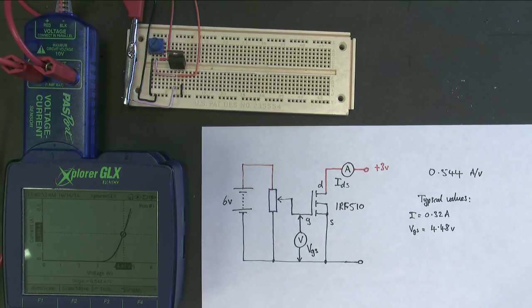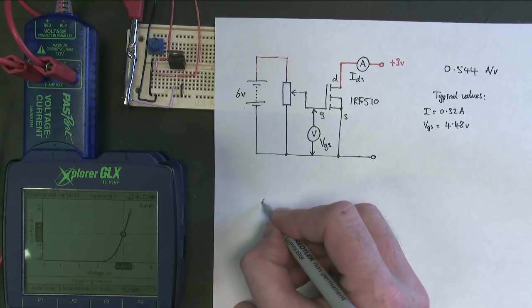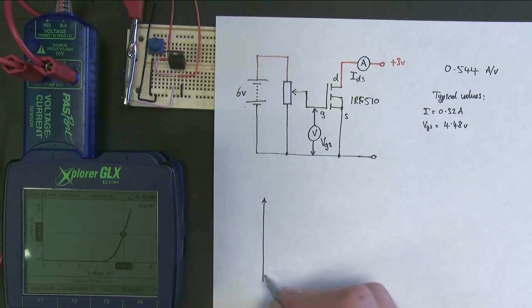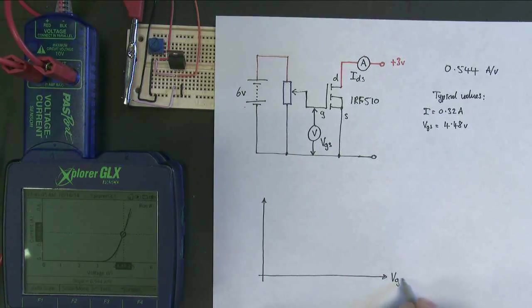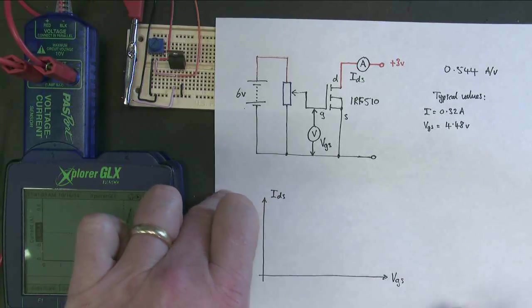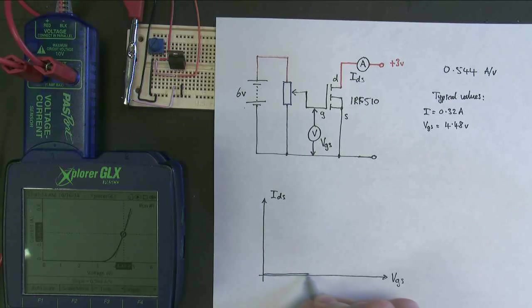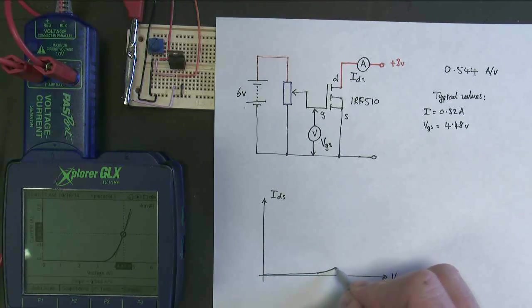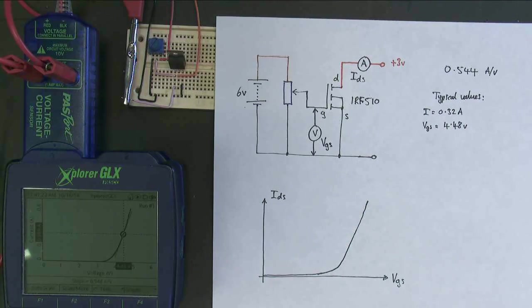So what we found was, if I redraw my stylized graph, that I plotted the gate source voltage against the current that was being allowed to flow, the drain source current. I got a graph that looked something like this. It got to a certain value, it went around the corner, and then it went up fairly linearly. Now we should know that the equation for a straight line is y equals mx plus c, so we should be able to do something with this.